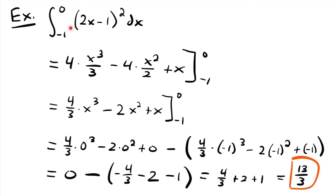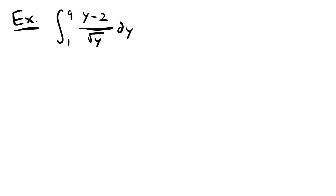And that is the final answer to this definite integral. Let's look at another example. We have the definite integral from 1 to 9 of y minus 2 divided by the square root of y, dy. You'll notice right away that we are integrating with respect to a different variable — dy instead of dx, and our function is defined with y. The first thing we want to do is rewrite the square root of y as y to the one half power, which will make it easier to manipulate this function into a form we know how to integrate.